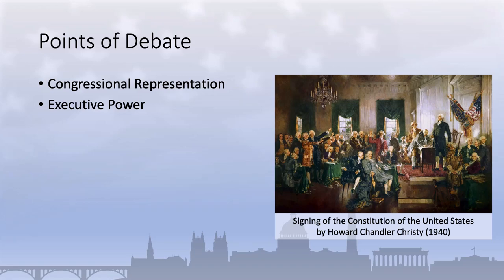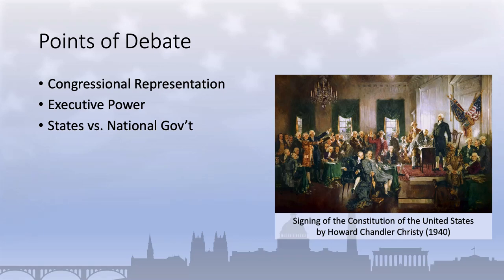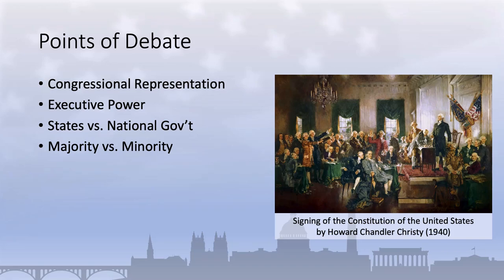Third, the question of the relative distribution of power between the states and the central government also remained. Many delegates were dissatisfied with the system of state sovereignty that limited decision making under the Articles of Confederation, but they also remembered the experience of British rule and did not want an overly powerful central government distant from the people. Delegates also wrestled with how to balance a system of government responsive to the will of the majority while also protecting the rights of the minority. Remember that the delegates were generally white, male, and moneyed. They feared what would happen if power was granted directly to the people almost as much as they feared the tyranny of a strong central government.